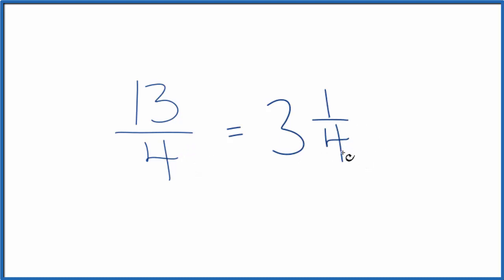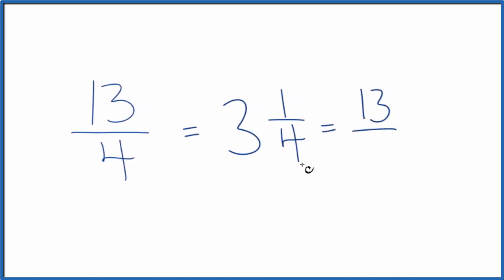You could check your work by multiplying 4 times 3 plus 1. That equals 13, and we put that over the 4 here, 13 fourths. So that's how you convert 13 fourths to a mixed fraction.